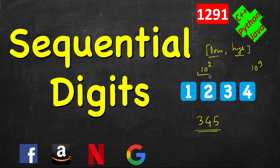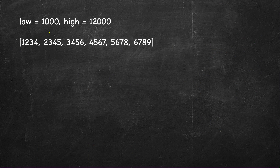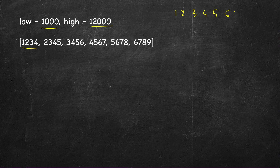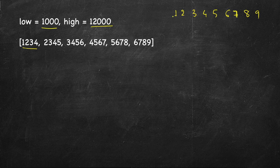Let's look at an example: low is 1000, high is 12000. The smallest number with sequential digits will be 1234. The only usable digits are 1 through 9 — zero cannot appear at the beginning, and later also you cannot have zero since it's the smallest. So we have just these nine digits and we pick them in order, with the window size depending on the lower limit.